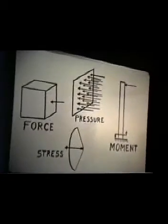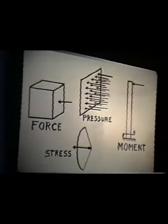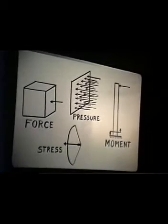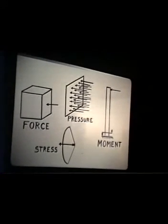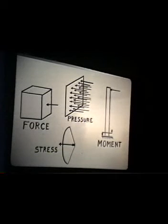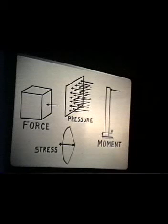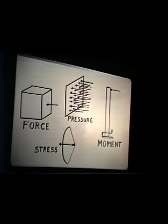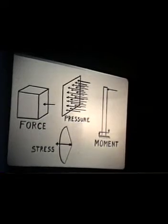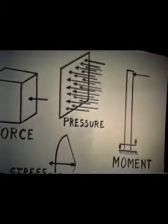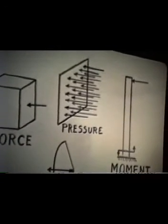Here we're going to talk about some mechanical properties that are very essential and very fundamental. We talk about force — force is defined as a vector quantity, meaning it has direction, which when applied to an object tends to produce acceleration. If nothing else restrains that object, it will begin to move in the direction that the force drives it. Pressure is force distributed over an area. We speak in terms of pounds per square foot or pounds per square inch, depending upon the units we are using.